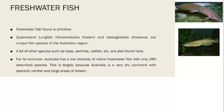Freshwater fishes are also present here. Queensland Lungfish and the Osteoglossid Arowana are unique fish in this region. Other fish include Bass, Perch, and Catfish. The Australian region has low diversity of native freshwater fish, with only 280 described species, largely because Australia is a very dry continent with sporadic rainfall and large desert areas.